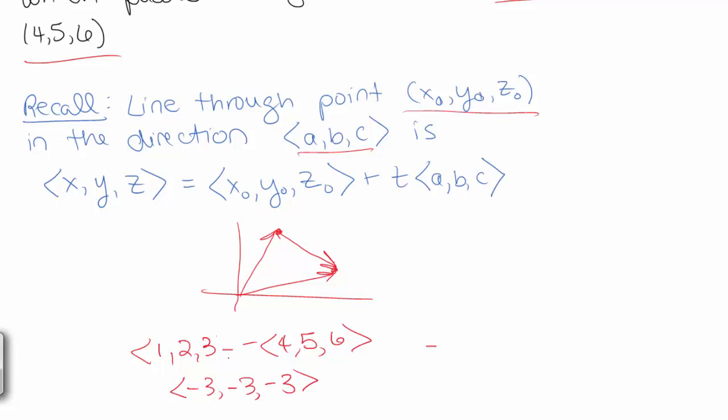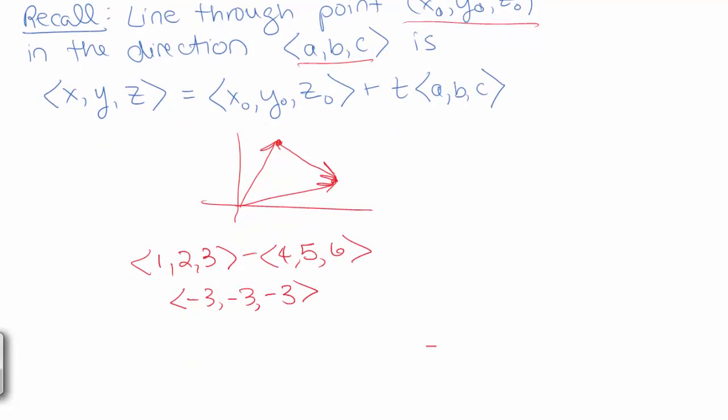And then we can put it into our formula. So we get x, y, z equals, pick one of your points, 1, 2, 3, plus t times the vector negative 3, negative 3, negative 3.